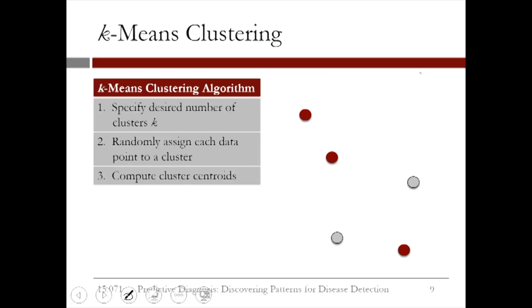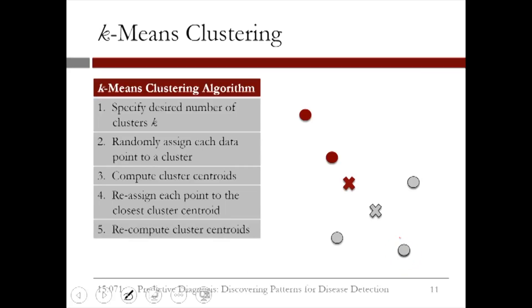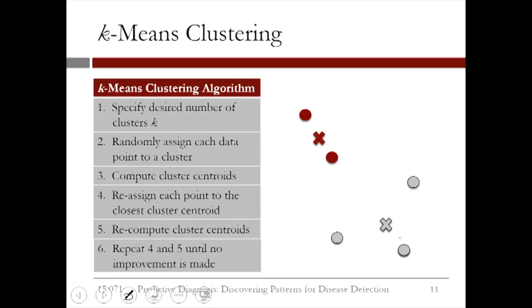We then compute the cluster centroids, indicated by the red x and the gray x. We reassign each point to the closest cluster centroid, and now you observe that this point changes from red to gray. We recompute the cluster centroids and repeat the previous steps until no improvement is made. We observe that in this case, the k-means clustering is done and this is our final clustering.